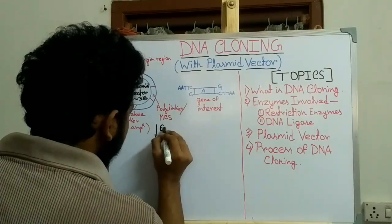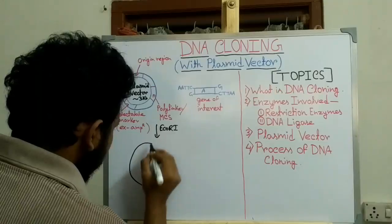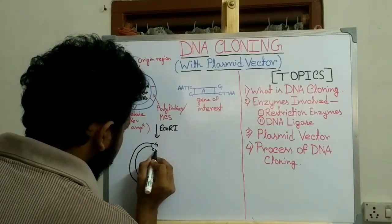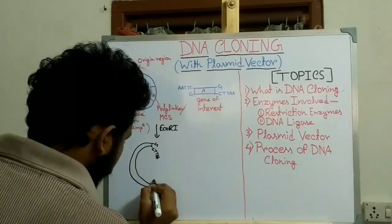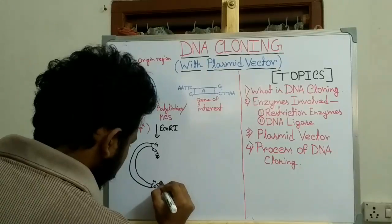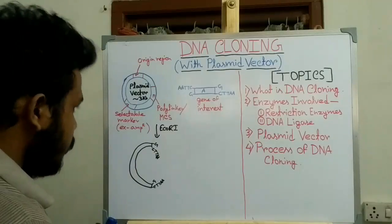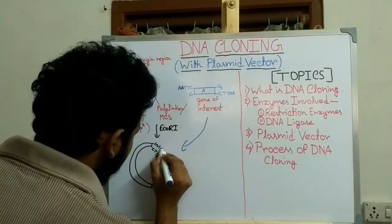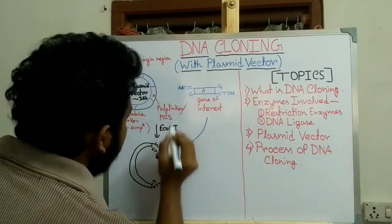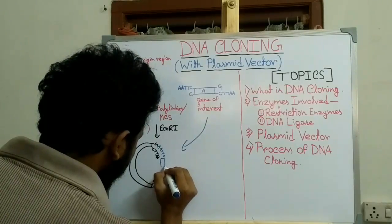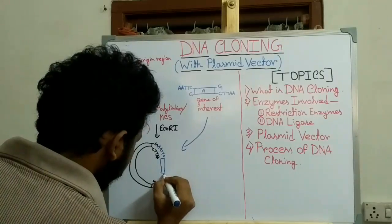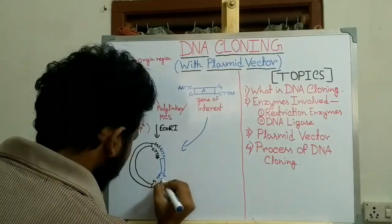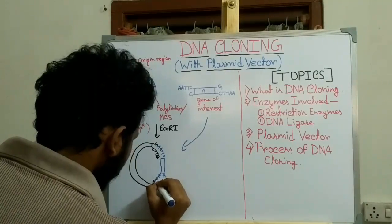It is cut with ECO-R1 and produces a sticky end like this: G-C-T-T-A-A. If we add the gene of interest, it will bind to it — A-A-T-T-C on one strand and C-T-T-A-A on the other — through complementary base pairing at the sticky ends.